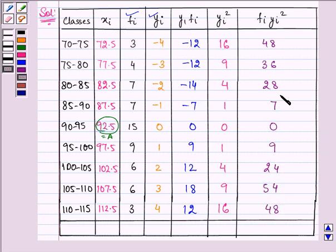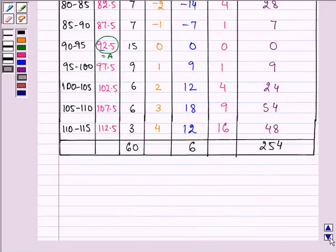Now find out the sum that is coming out to be 254 here, 6 over here and the sum of all the frequencies are 60.